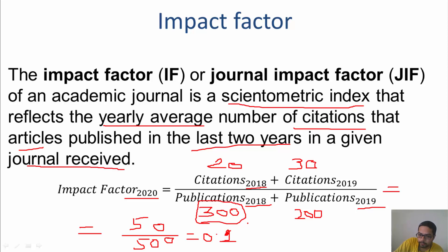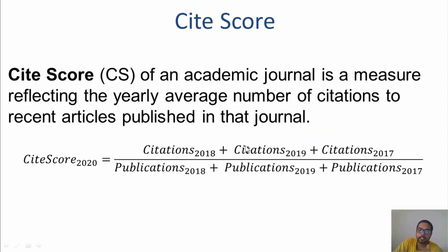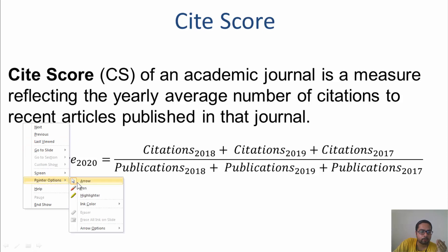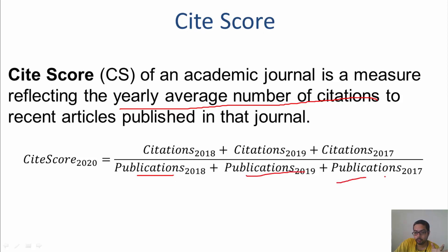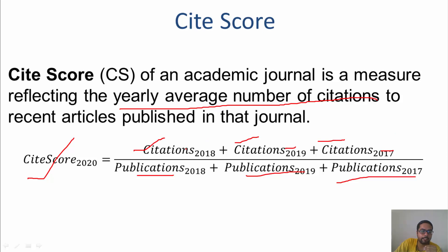CiteScore is somewhat similar to impact factor — it also reflects the yearly average number of citations — but instead of the last two years, it looks at the last three years. So to measure the CiteScore for 2020, you look at citations received in 2017, 2018, and 2019.